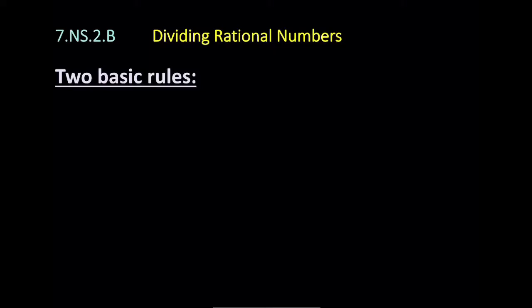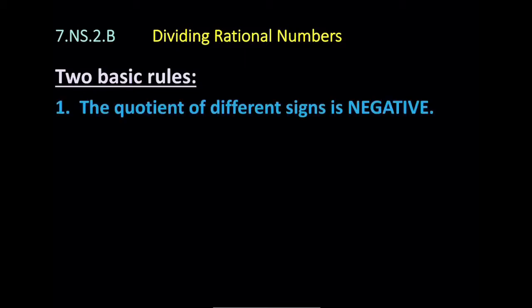Now one thing, if you've already done the lesson on multiplying rational numbers, you might notice that a lot of these rules are the same, if not all the rules are the same. The quotient of different signs is going to be negative quotient. So if you divide a negative times a positive or a positive times a negative, it's going to come out to be negative.